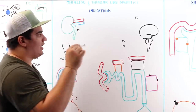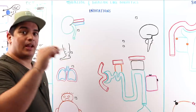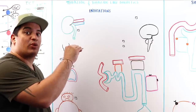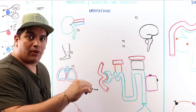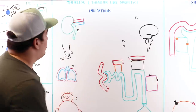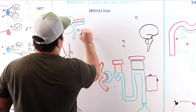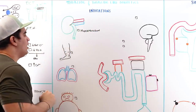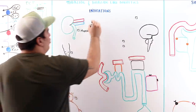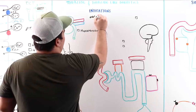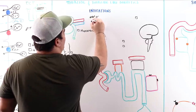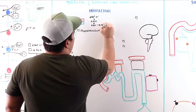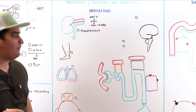To summarize the mechanism: thiazide and thiazide-like diuretics inhibit sodium and chloride reabsorption via the NCC transporter → less sodium and chloride in blood → less water driven into blood → decreased blood volume → decreased blood pressure. This makes them very beneficial in patients with hypertension.